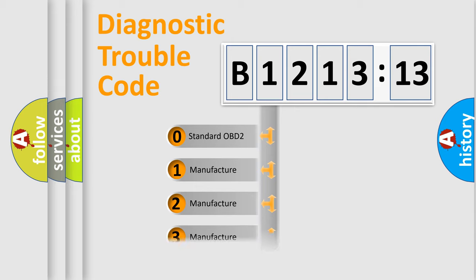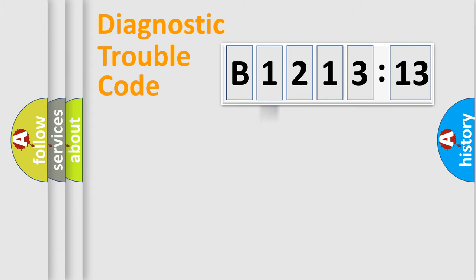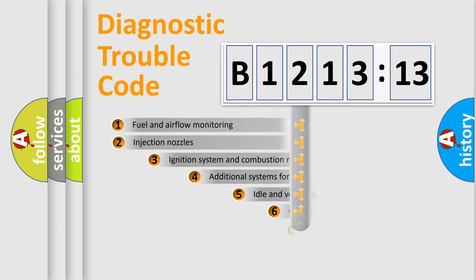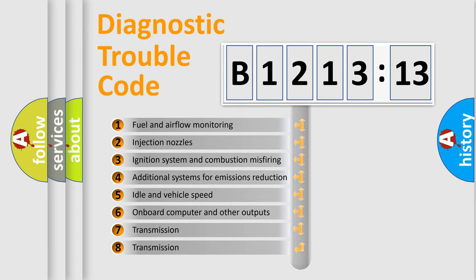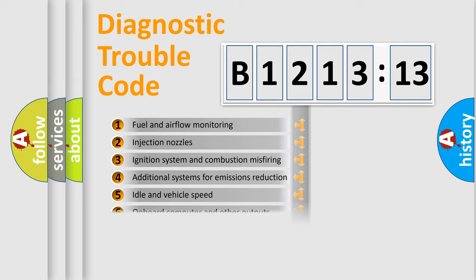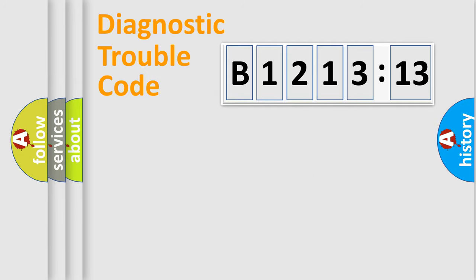If the second character is expressed as zero, it is a standardized error. In the case of numbers 1, 2, 3, it is a car-specific error. The third character specifies a subset of errors.